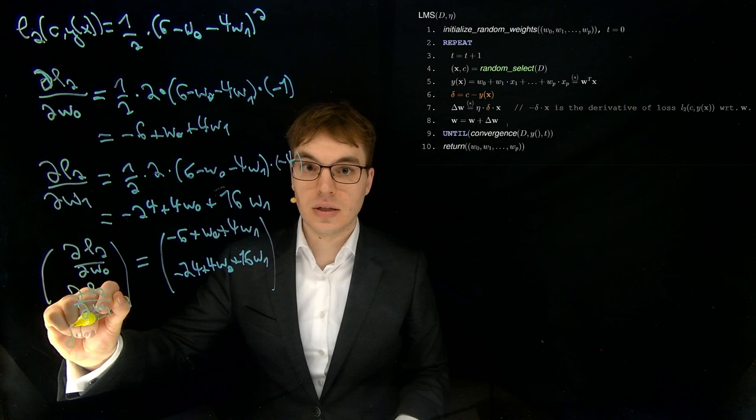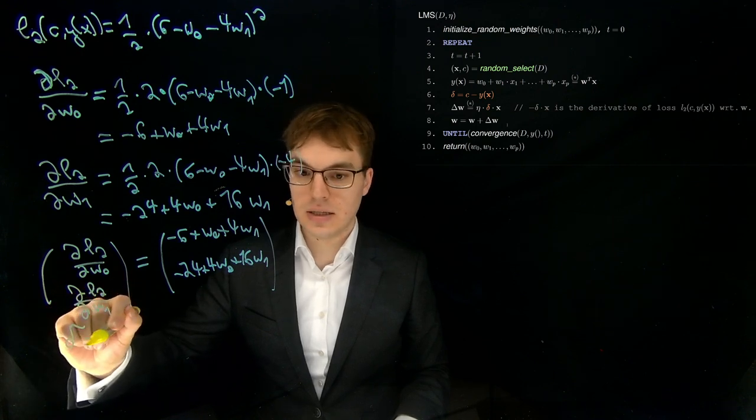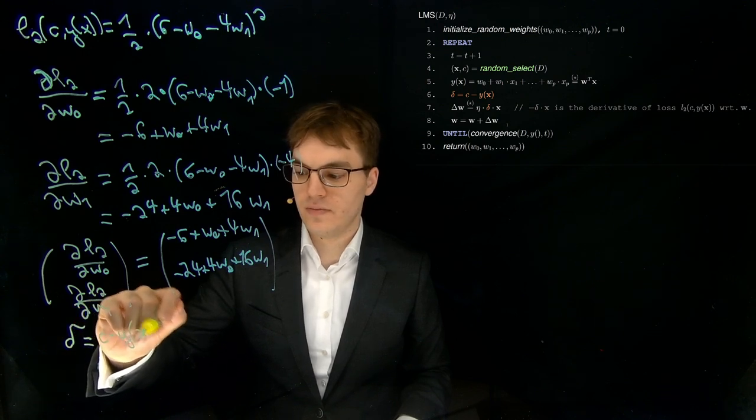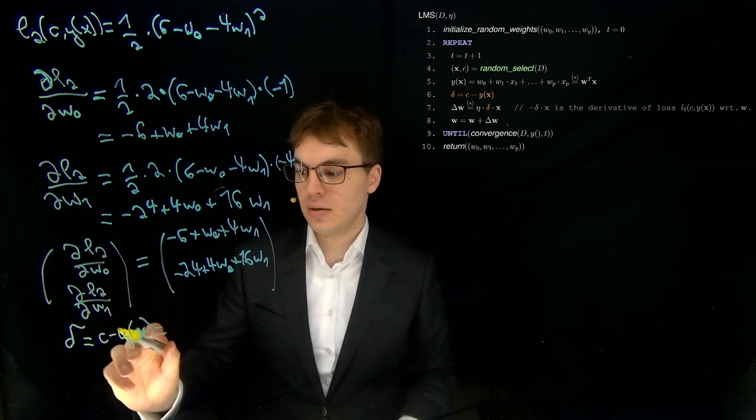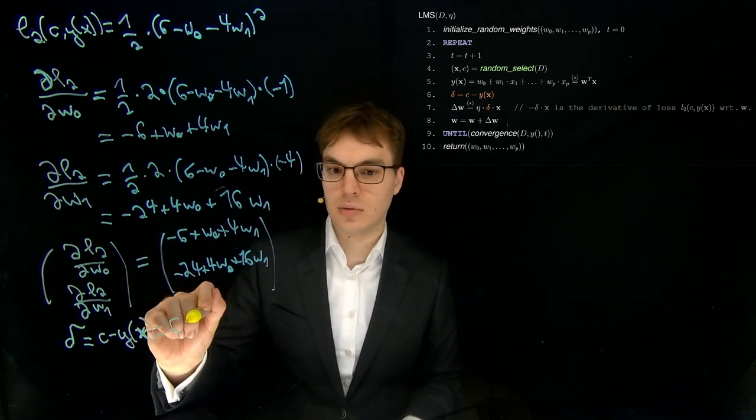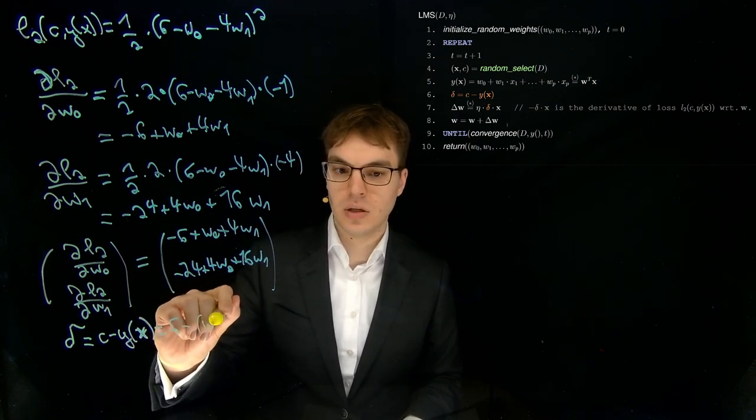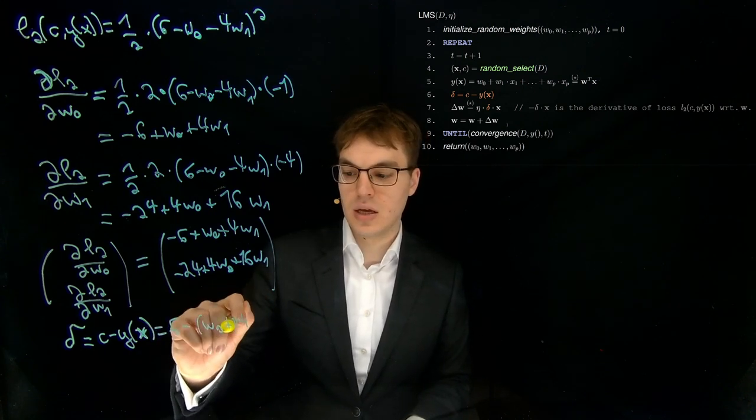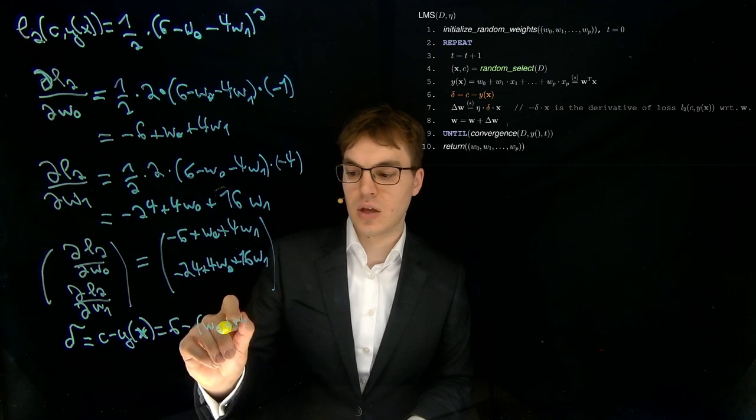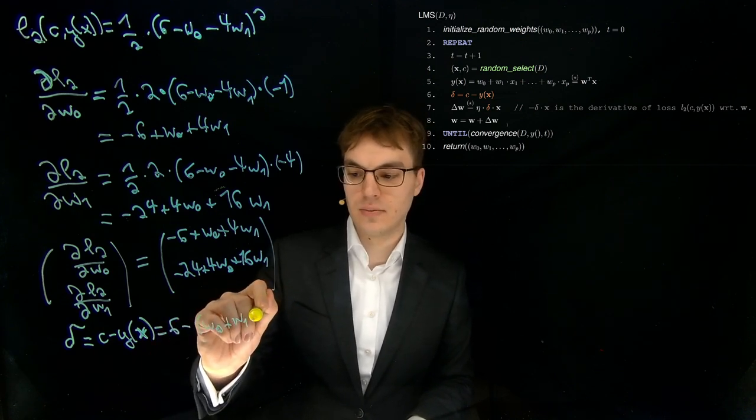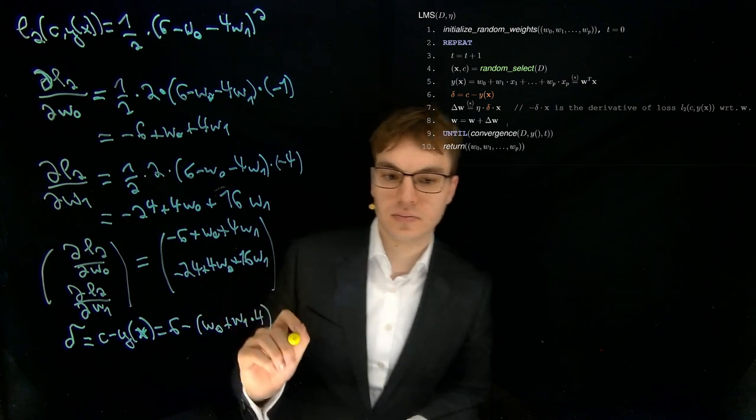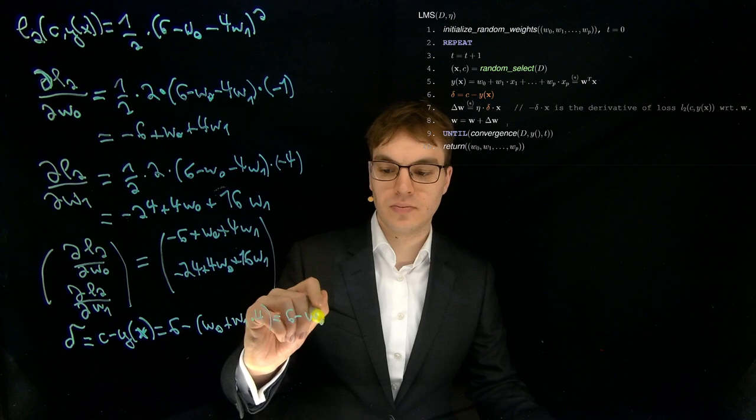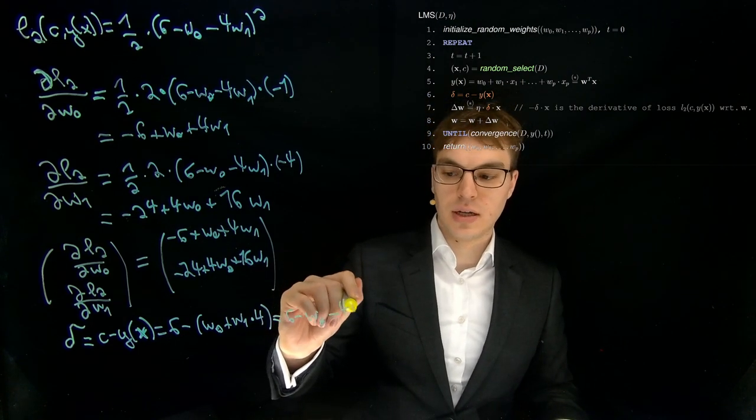So this delta is equal to C minus Y of vector X. The C is our six that we got from our point earlier. And for our model, we just take the straight line equation again and already fill in our current value for X, which is four. And then we just get six minus W zero minus four W one.